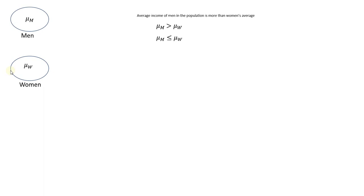Then we write the opposite of that hypothesis, and the opposite hypothesis is that the average income of men is less than or equal to the average income of women, and we write that down.